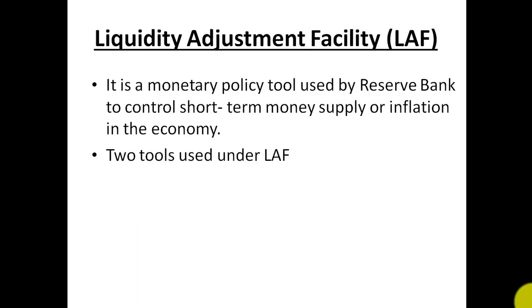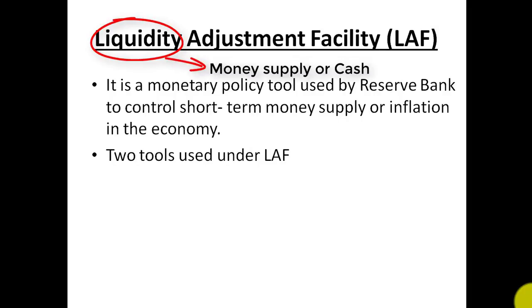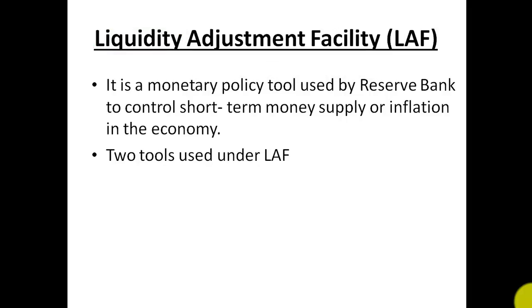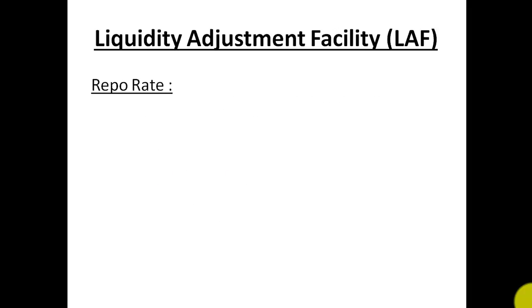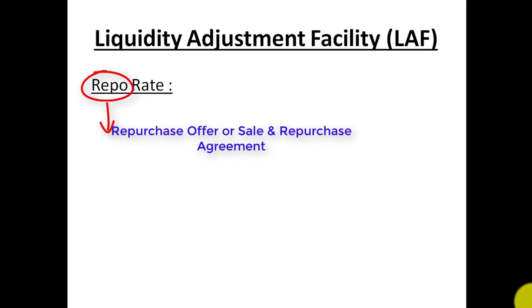There are two tools used under Liquidity Adjustment Facility to maintain liquidity — liquidity being nothing but money supply or cash in the economy. The first tool is repo rate and the second is reverse repo rate. These are the two rates used in the Liquidity Adjustment Facility. Repo rate is short for 'repurchase offer,' also called a sale and repurchase agreement.